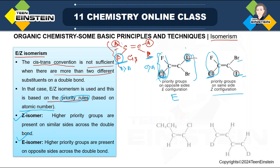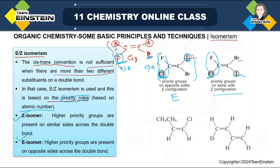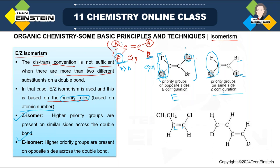Now another example: consider a C=C double bond with carbon one and carbon two. On carbon one, a carbon substituent gets more priority than hydrogen because carbon has a higher atomic number than hydrogen. On the right side, chlorine gets more priority. Since both higher priority groups are on the same side, we consider it Z.